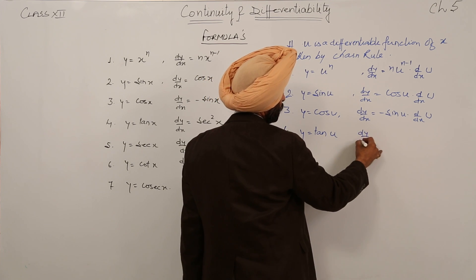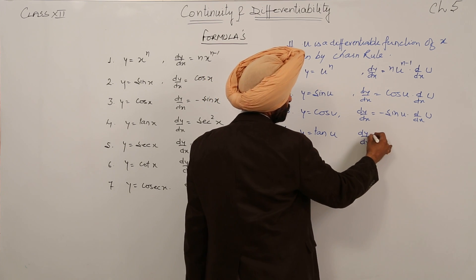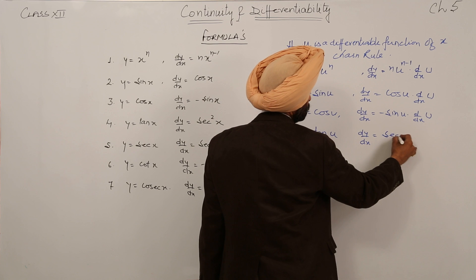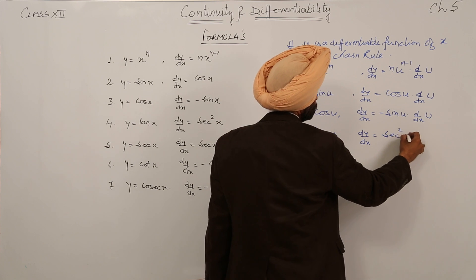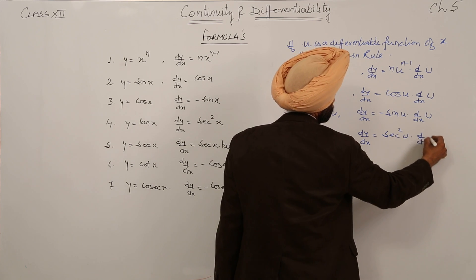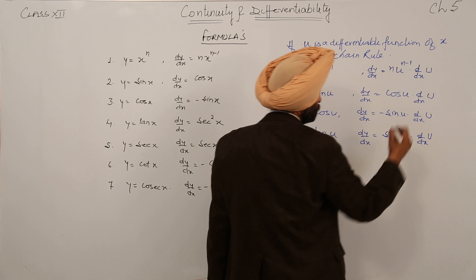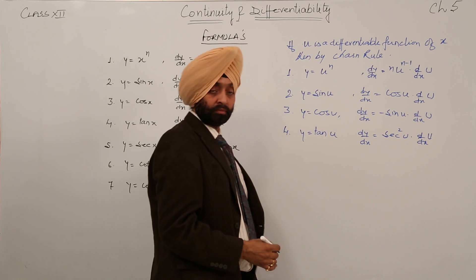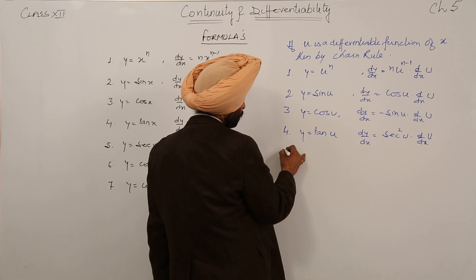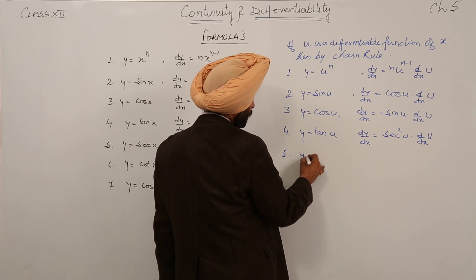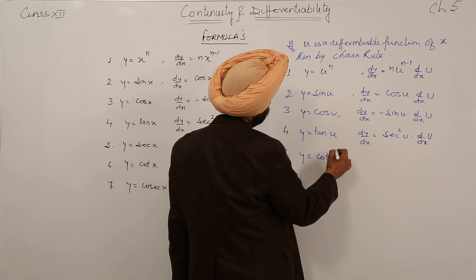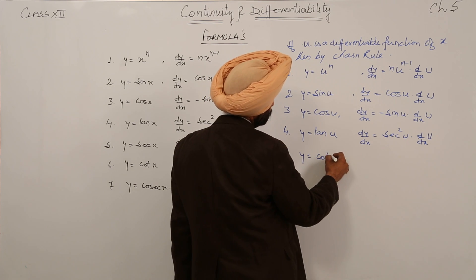Number 4: y is equal to tan u. dy/dx is equal to secant squared u, into d/dx of u. The same chain rule pattern applies for every one of these formulas.